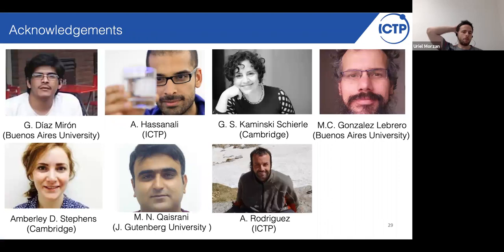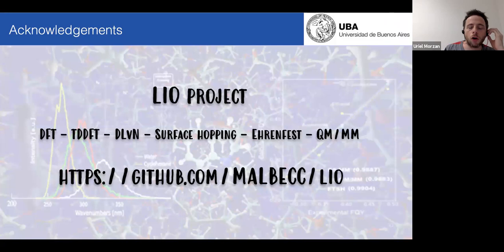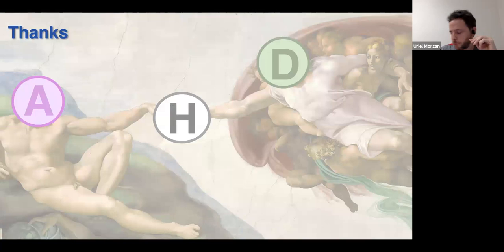These are the people that participated in this work — mainly Gonzalo and Ali. Gonzalo did most of the calculations. As I told you before, Gonzalo is a PhD student who is finishing his PhD. All of these calculations were done with the Leo project — Leo is an electronic structure code that we developed at the University of Buenos Aires. If you're interested in using it, the code is free and open source and you can download it from our website, or just send me an email and I can help you with that. Thank you very much.